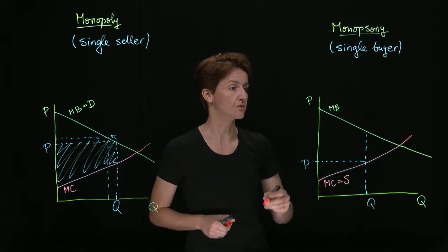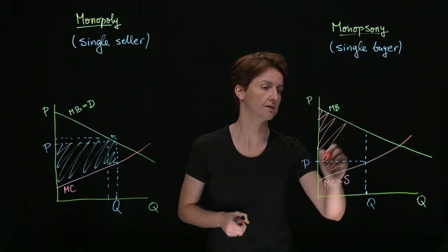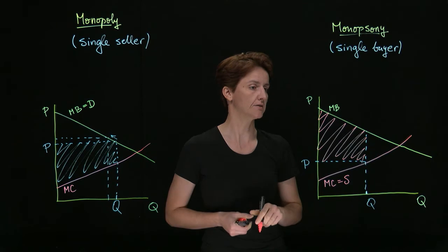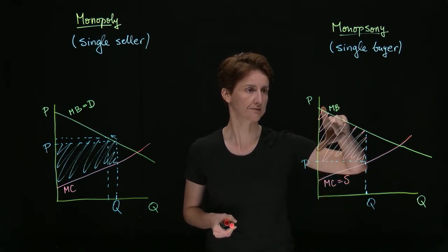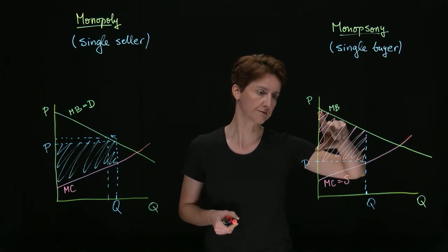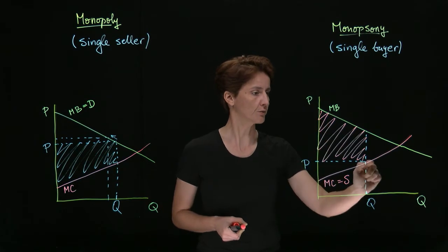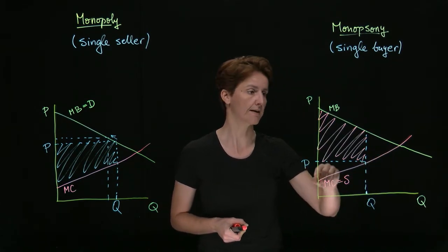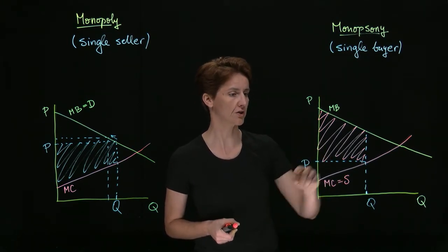The surplus to consumers, to the consumer in this case, is this area under marginal benefit and above the price. So for each one of those units, the buyer gets a surplus. That's the difference between their benefit and the cost of paying for that unit. If they were to offer a higher price, they would be able to buy more. However, the loss from having to pay more for each would be greater.